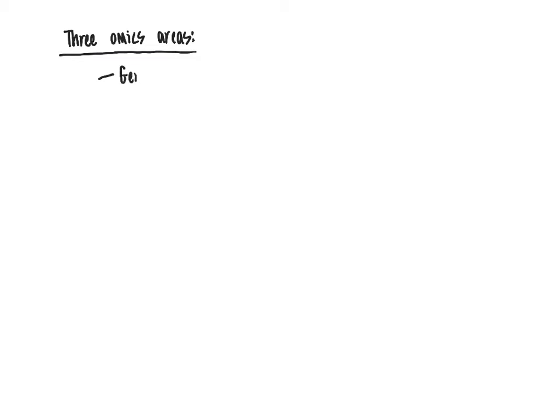The three areas of omics we are going to focus on are genomics, proteomics, and metabolomics. There are also additional areas of omics technology, such as transcriptomics, which looks at gene transcripts — namely mRNA and some other derivatives — but the three main areas of focus are going to be genomics, proteomics, and metabolomics.